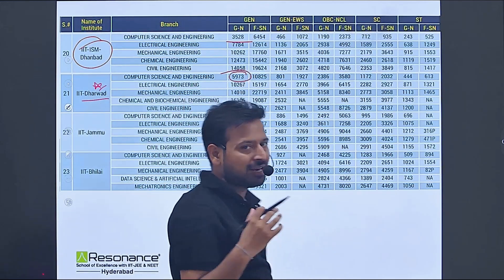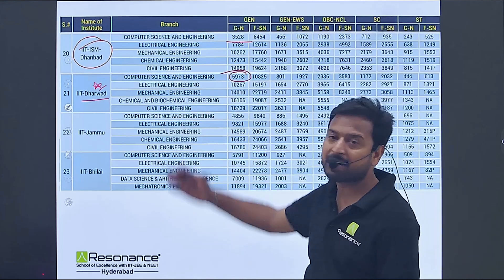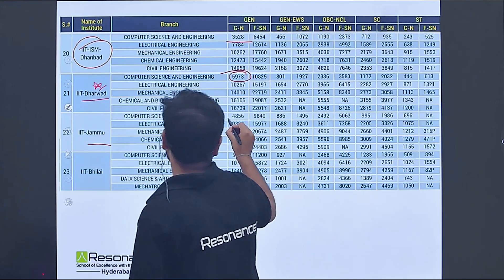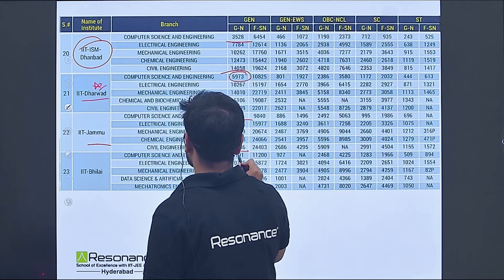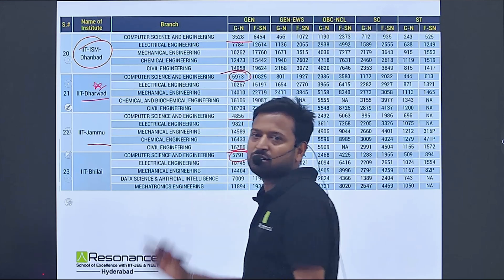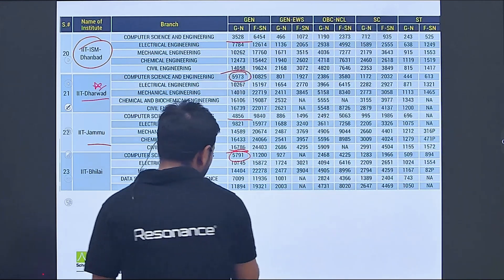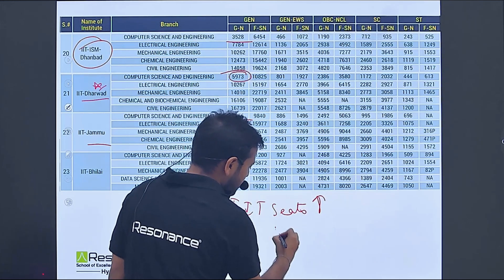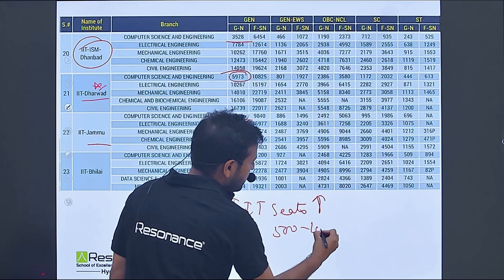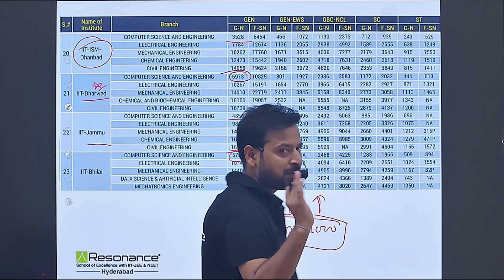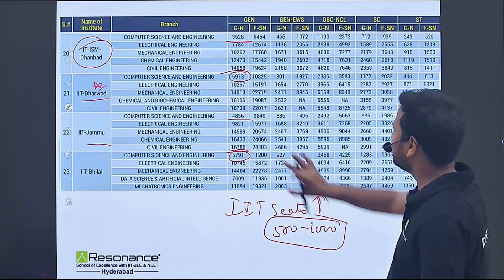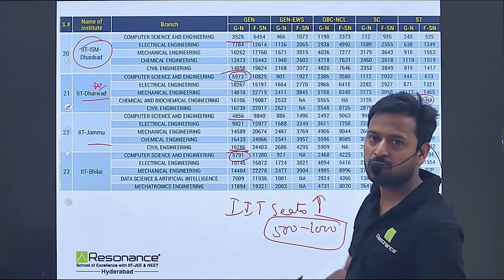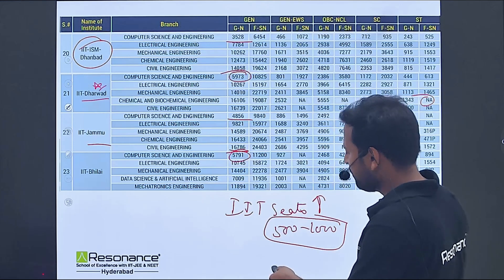ISM Dhanbad CSE 3528. IIT Dharwad 5973 - here also we can expect variation if you're getting rank till 6k, as many branches have been introduced. IIT Jammu 4856, IIT Bhilai 5791. These are the ranks for IITs we are expecting, but IIT seats have been increased, so there would be a variation of 500 to 1000, plus minus, you can easily get the reference.